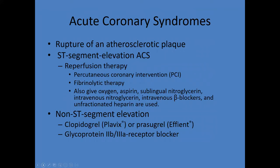Now we're going from pulmonary medications to those that relate to the heart and coronary syndromes. Acute coronary syndromes — the etiology is a rupture of atherosclerotic plaque, which manifests as ST segment elevation. Reperfusion therapy is the way to go: percutaneous coronary intervention in the cath lab, fibrinolytic therapy such as TPA or streptokinase administration. There's also a saying — MONA greets these patients: Morphine, Oxygen, Nitroglycerin, and Aspirin. So oxygen, aspirin, sublingual nitroglycerin, and intravenous beta blockers are tools in our arsenal.